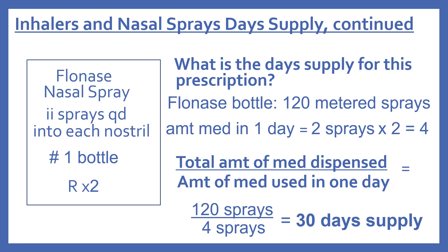One more example with nasal spray: Flonase nasal spray, two sprays once daily into each nostril, dispense one bottle, refill times two. The Flonase bottle has 120 metered sprays. Two sprays into each of two nostrils is 2 times 2 equals 4 sprays a day. So 120 divided by 4 gives a 30-day supply.